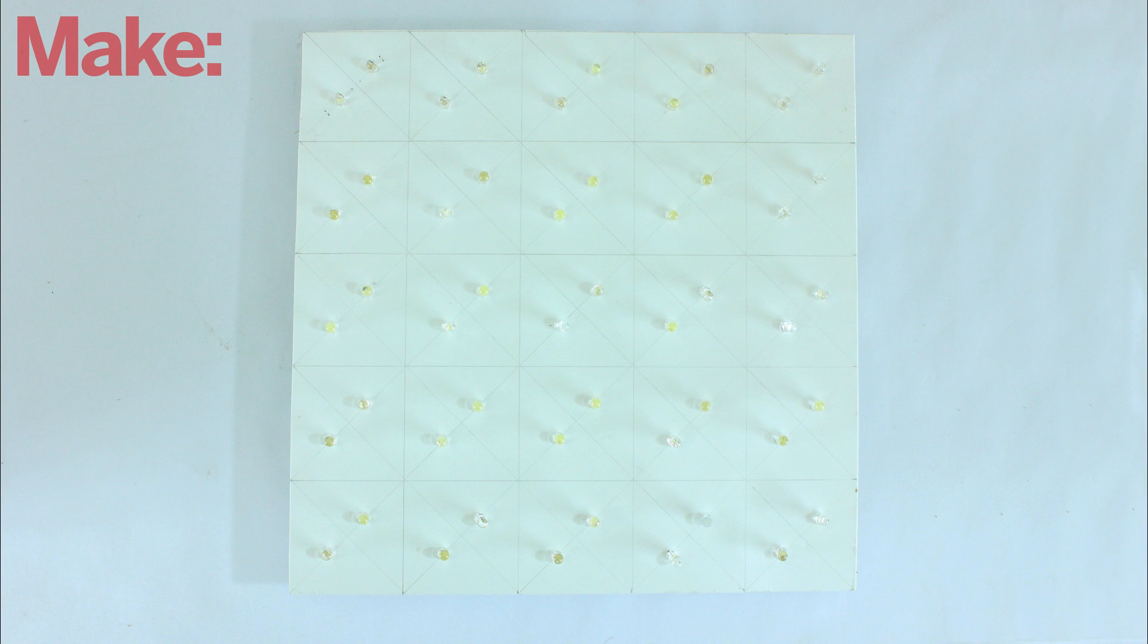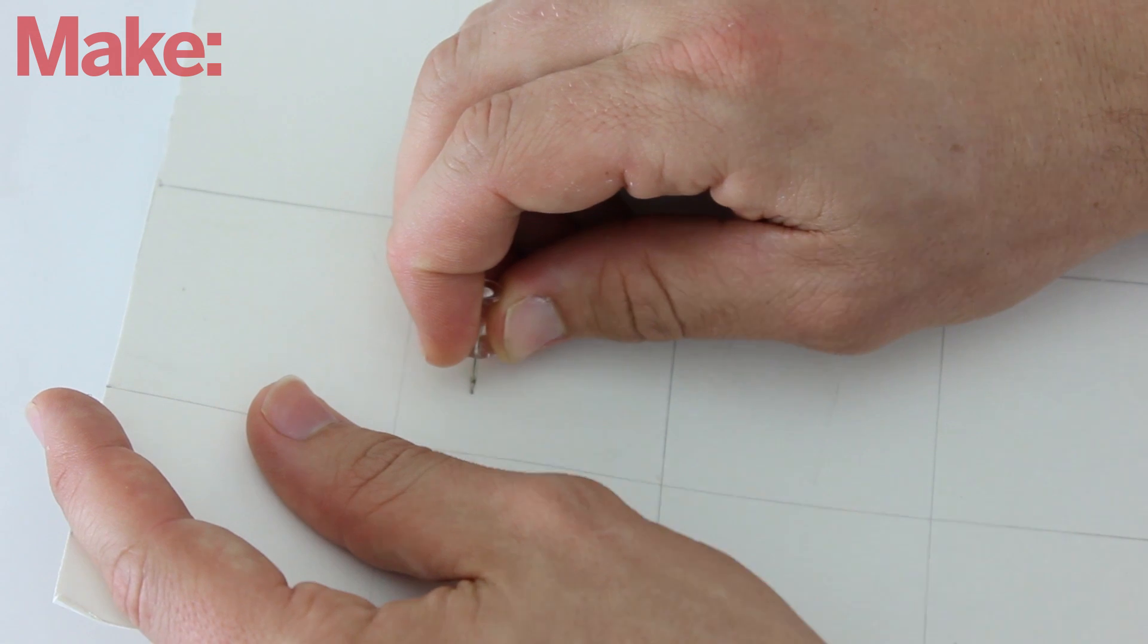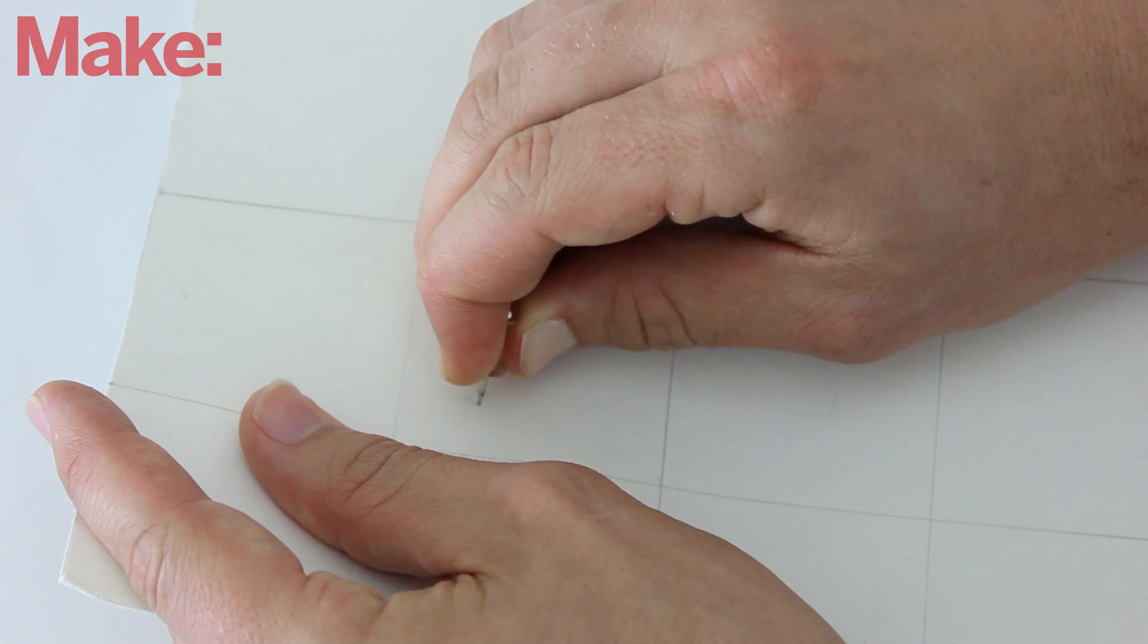Next we need to attach a set of LEDs in each square. To do this, take a pin and make two holes for the leads of each LED.